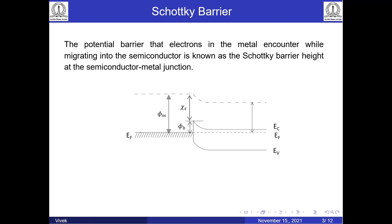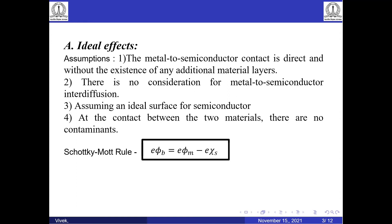The Schottky barrier height at the semiconductor-metal junction is the potential barrier that electrons in the metal encounter while attempting to migrate into the semiconductor. From the band diagram of the Schottky diode, the barrier height φ_B is simply the difference between the metal work function φ_M and the semiconductor electron affinity χ_S. For the ideal case, we assume that the metal-to-semiconductor contact is intimate with an ideal surface, and that there is no metal-to-semiconductor interdiffusion. Considering these assumptions, we can approximate using the Schottky-Mott rule.